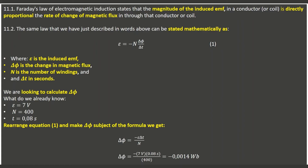Faraday's law can be stated mathematically as Equation 1, where the induced EMF is represented by the Greek letter epsilon (ε), the change in magnetic flux by delta phi (ΔΦ) — delta being the triangle symbol and phi the circle with a line — N is the number of windings (400), and Δt is the change in time measured in seconds.